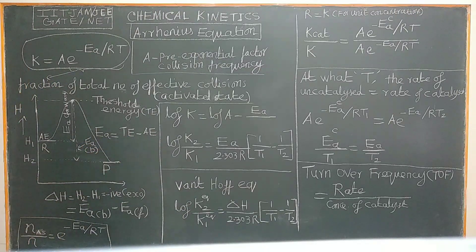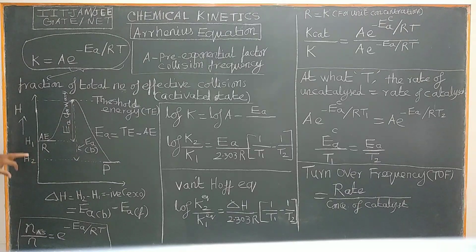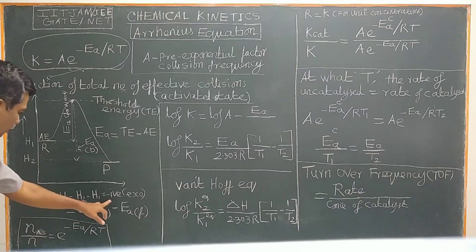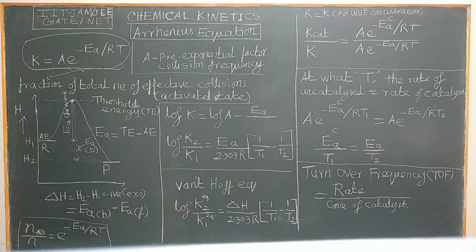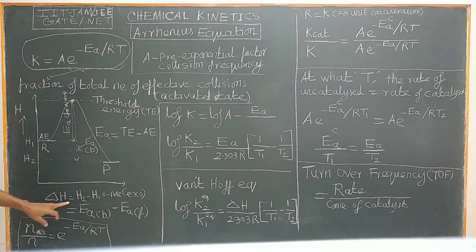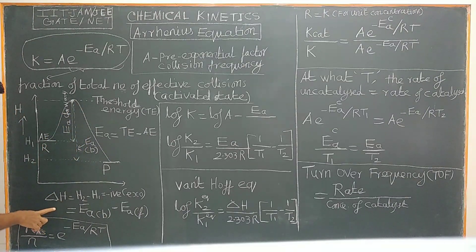This can be easily calculated. In this process, along the reaction progress, this is H1, the enthalpy of the reactant, and H2 the enthalpy of the product. H2 minus H1 is negative, confirming this is an exothermic process with delta H negative. The activation barrier for the reverse reaction, Eab, is given by this relationship, and Eab minus Ea equals delta H.